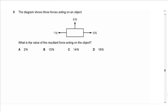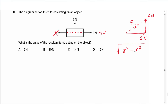Question 8 says: the diagram shows three forces acting on an object. What is the value of the resultant force? First, eliminate the 1 newton to the left by subtracting it from the 9 newtons, giving a resultant horizontal force of 8 newtons to the right. We also have a vertical force of 6 newtons upwards. Drawing them head to tail gives a right-angled triangle, and using Pythagoras: the square root of 8² + 6² gives 10 newtons. The answer is B.